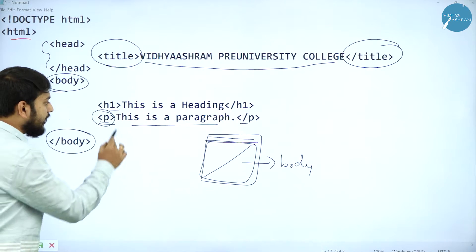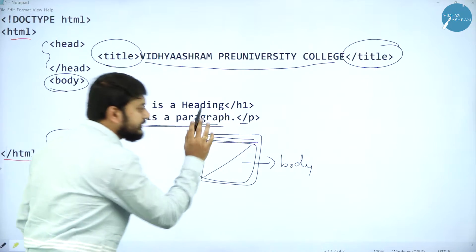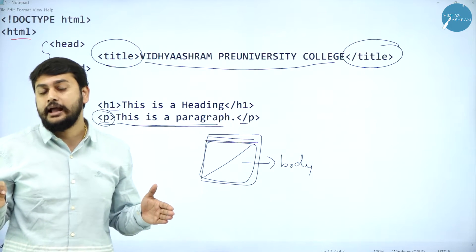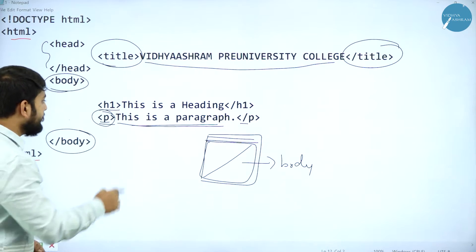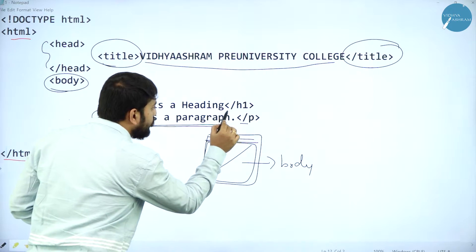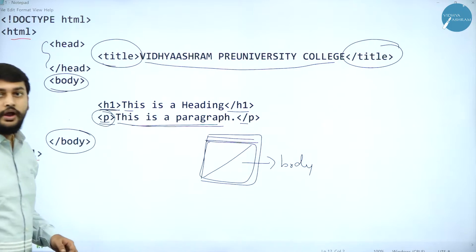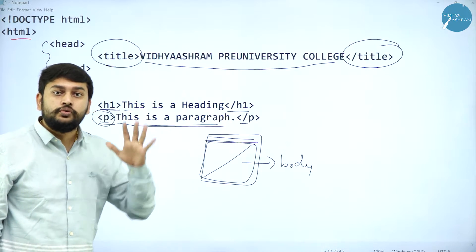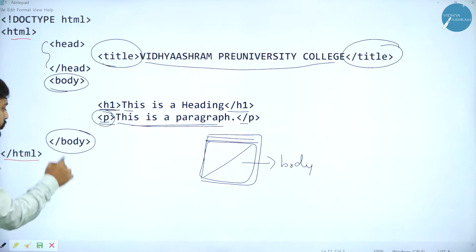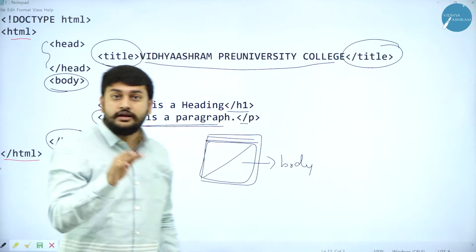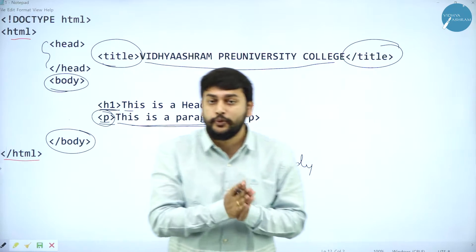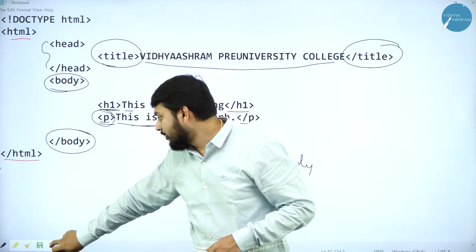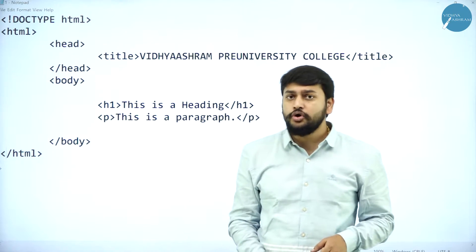Whatever the content that I have within the paragraph tag, that will be considered for the paragraph. Whatever the content that I have between the heading opening and closing tags belongs to the heading tag. Once I am done with this, I will close the body tag, and after that, at the end of my HTML program, I will close the HTML tag.